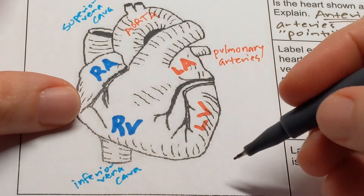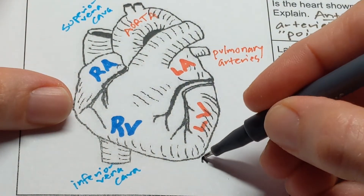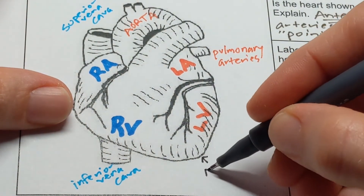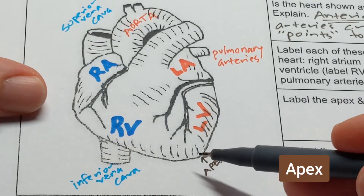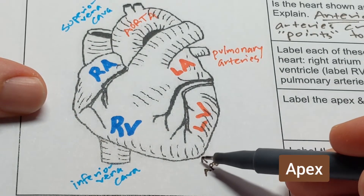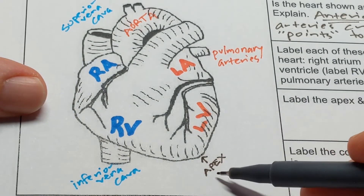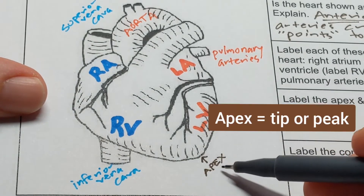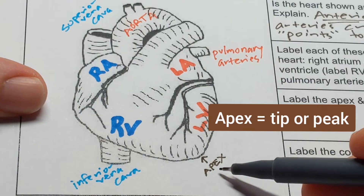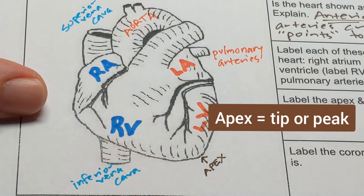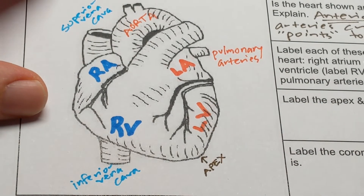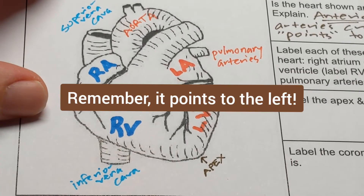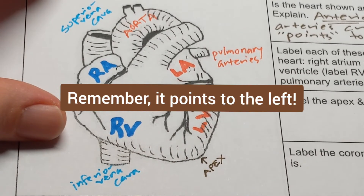The next exterior structure we're going to label is the apex. The apex is the point of the heart — the tip. On a mountain, apex means the peak, so it's a tip or a peak. And as I told you, it helps you know which side is which because it points to the left.